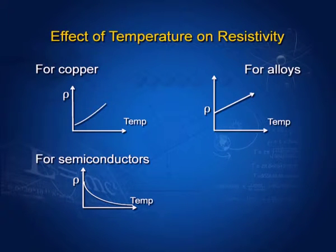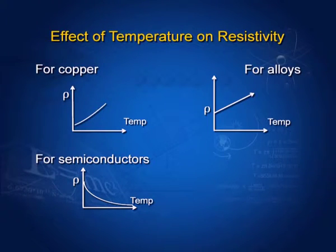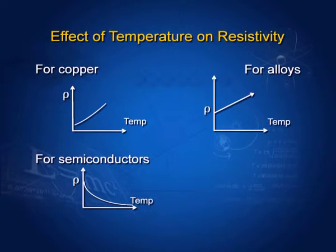Effect of temperature on resistivity: for copper, resistivity varies with the rise in temperature — initially it increases slowly, but increases more rapidly at higher temperatures. For alloys, resistivity remains almost constant with high temperature. For semiconductors, resistivity decreases with the rise in temperature. The following graphs represent the variation of resistivity with temperature.